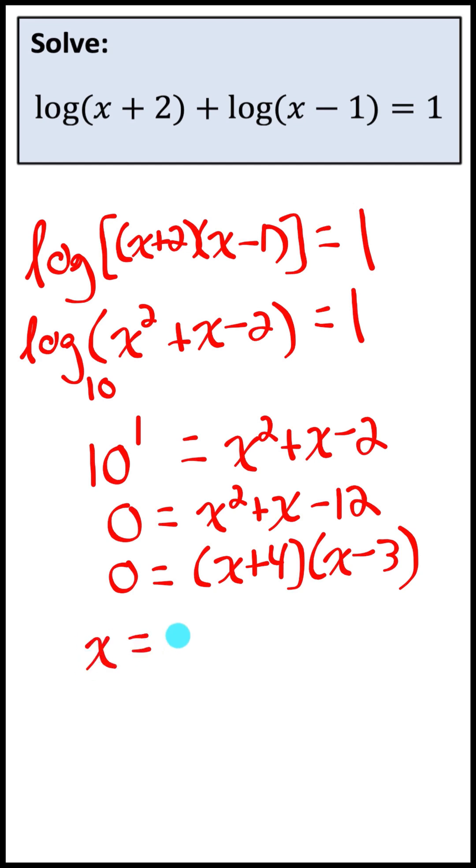So I get two solutions to this: I get negative four and I get three. The solution of negative four makes both of these logarithmic expressions undefined, so we say that is an extraneous root.